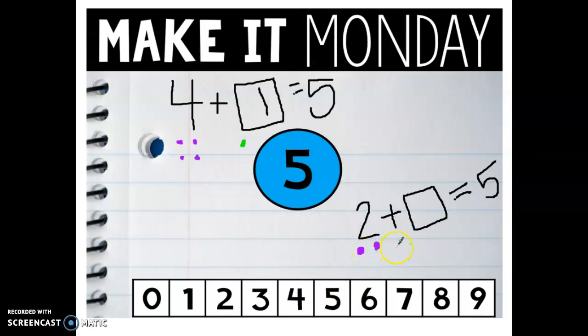Well how many more dots do I need to add to get to five? I have one, two, three, four, five. So how many dots did I add to get to five? I have three dots that I added to two to make five. So two plus three is another way that we can make five.